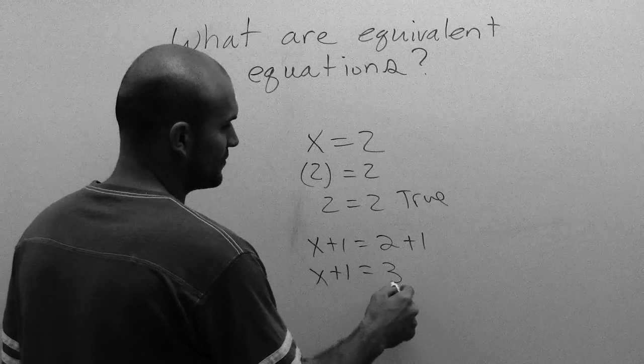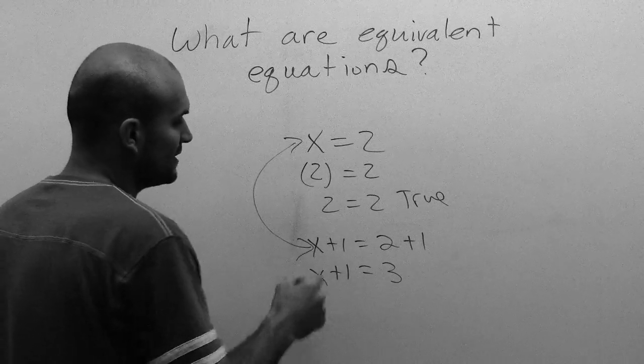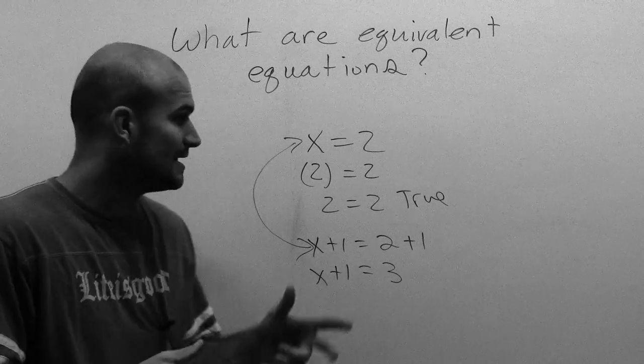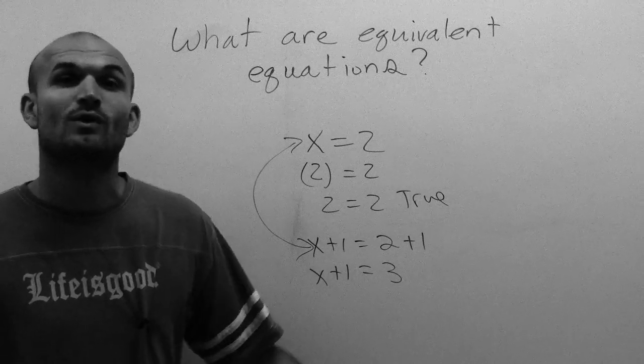If I simplify this here, I have x plus 1 equals 3. Notice how I added a 1 on both sides. These are what we call equivalent equations. As long as you add, subtract, multiply, or divide on both sides, you're going to produce equivalent equations.